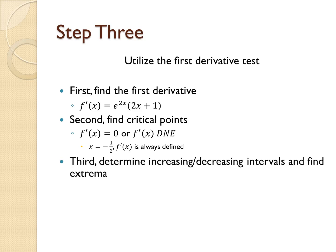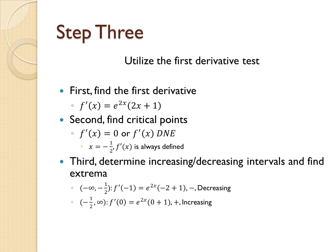Now we can determine the open intervals over which our function is increasing or decreasing and locate extrema. On the interval (-∞, -1/2), plugging in a test value like x = -1 gives a negative output, so our function is decreasing. On the interval (-1/2, ∞), plugging in x = 0 gives a positive output, so our function is increasing. This means we have a relative minimum at x = -1/2. Evaluating the original function at x = -1/2, our relative minimum is located at (-1/2, -1/(2e)).